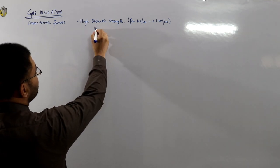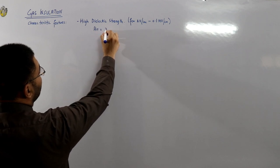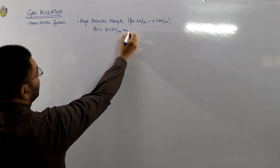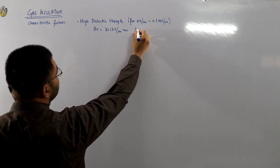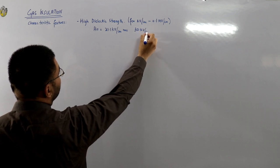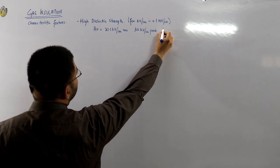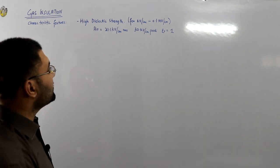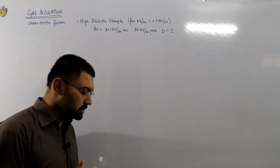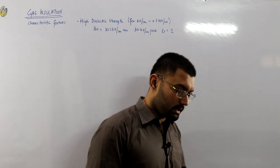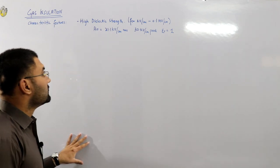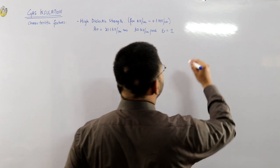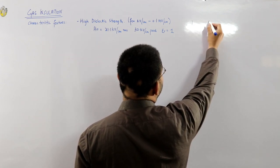Air has a dielectric strength of 21.1 kilovolts per centimeter RMS, and the peak value is 30 kilovolts per centimeter, with a relative permittivity of one. This is for free space — or air, whichever you prefer. The dielectric strength is calculated using a two-electrode structure: you apply a voltage and increase it at a certain rate.